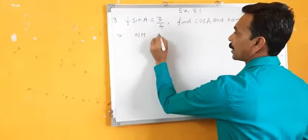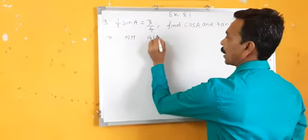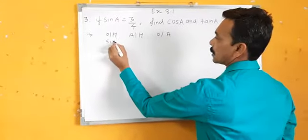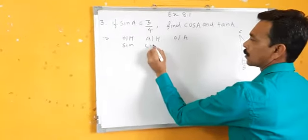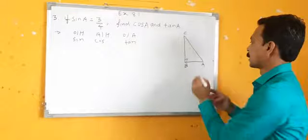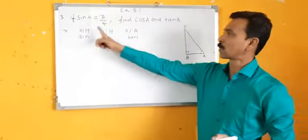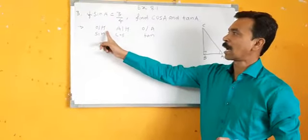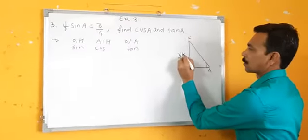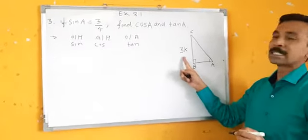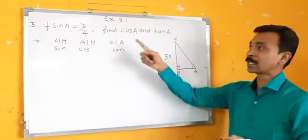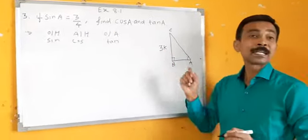Old Harry and his old aunt — this is the mnemonic. Sin, cos. Sin means what? Opposite upon hypotenuse. The opposite side is here, so BC will be 3K. Why K? Because it is in ratio.